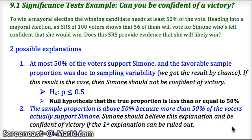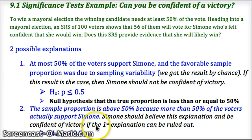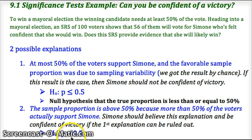She would like to be able to reject that and say that 56 out of 100 couldn't happen by chance — that it's far enough away from 50% to show that she should win. So the alternative is that she has more than 0.5, or 50%, of the support. If she can prove that 56 out of 100 shows that the null isn't true, then she can reject the null hypothesis and assume that she is going to win the election.